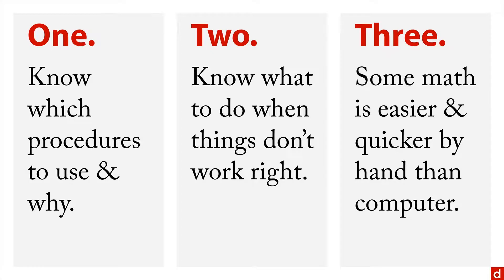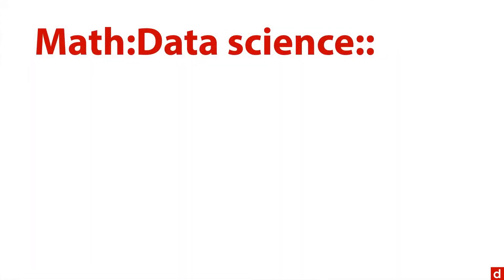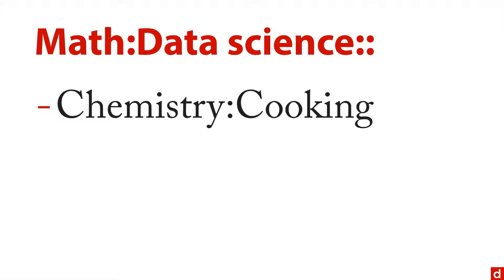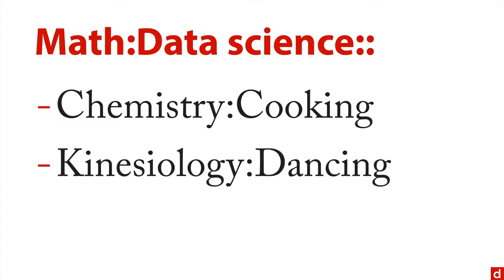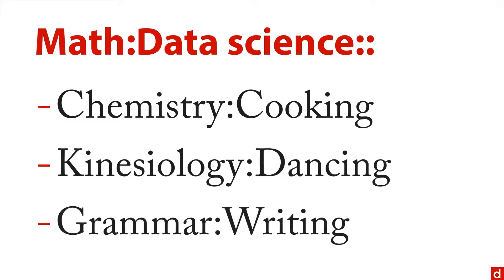Now, fundamentally, there's a nice analogy here. Math is to data science as, for instance, chemistry is to cooking, kinesiology is to dancing, and grammar is to writing. The idea here is that you can be a wonderful cook without knowing any chemistry, but if you know some chemistry, it's going to help. You can be a wonderful dancer without knowing kinesiology, but it's going to help. And you can probably be a good writer without having an explicit knowledge of grammar, but it's going to make a big difference. The same thing is true of data science. You will do it better if you have some of the foundational information.